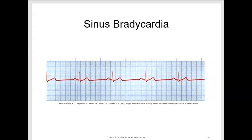Sinus bradycardia increases coronary perfusion time, but it may decrease coronary perfusion pressure. However, myocardial oxygen demand is decreased. Well-conditioned athletes with bradycardia have a hyper-effective heart in which the strong heart muscle provides an adequate stroke volume at a low heart rate to achieve a normal cardiac output, so you may have patients with a heart rate less than 60 who are not symptomatic.